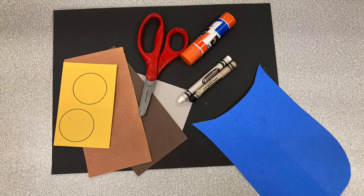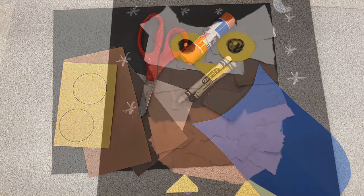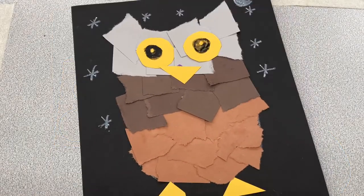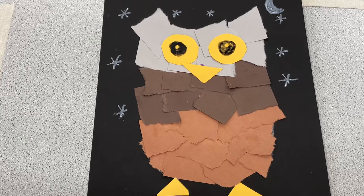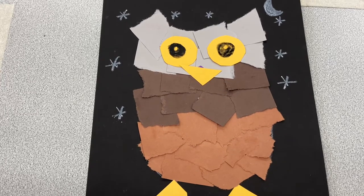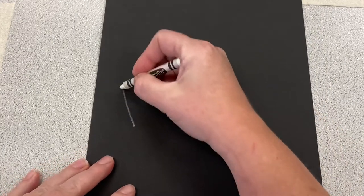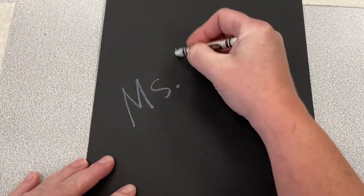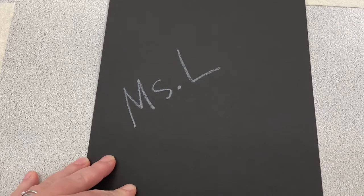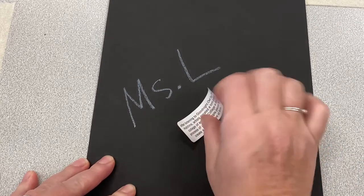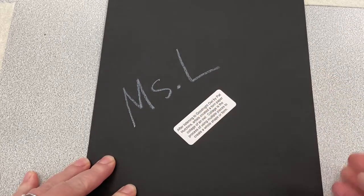Here are the supplies we will need today to create our owl collage. A collage is a piece of art where a bunch of small pieces come together to create a larger image. Take your white crayon and write your name on the back of the black paper. Don't forget to add your sticker.